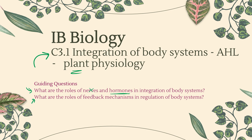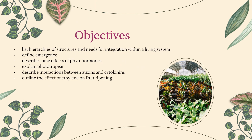We're also going to talk about the roles of feedback mechanisms and the regulation of plant body systems. Our objectives for today: we're going to talk about hierarchies of structures and the need for integration amongst those structures; we're going to define emergence; we're going to describe some effects of phytohormones; we're going to explain phototropism; and we're going to describe the interactions between auxins and cytokinins.